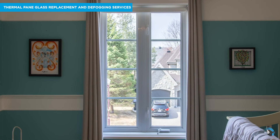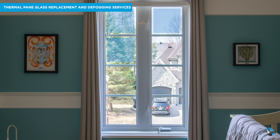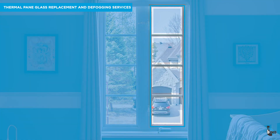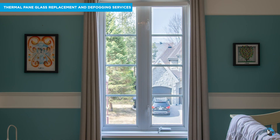If there are window grills in the sealed unit, you must identify the number of squares or quadrants. In this sealed unit, there are four squares or quadrants — one square or quadrant across the width, and four squares or quadrants across the height.